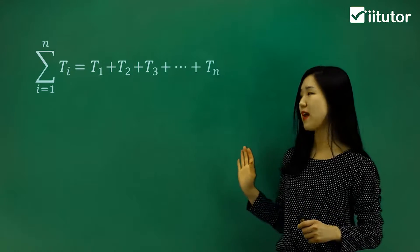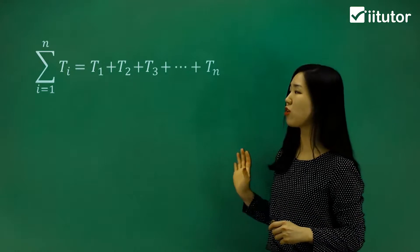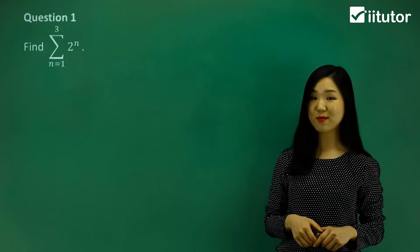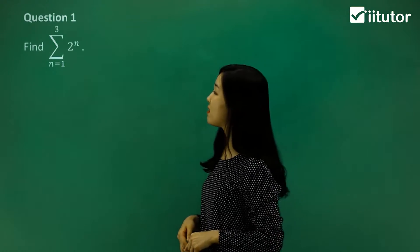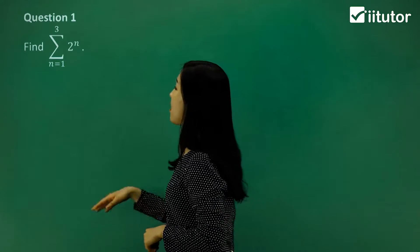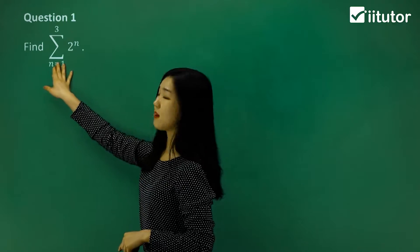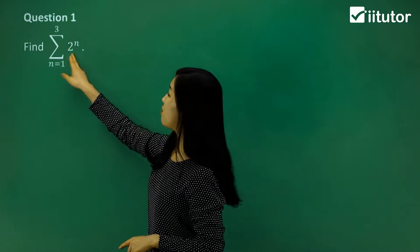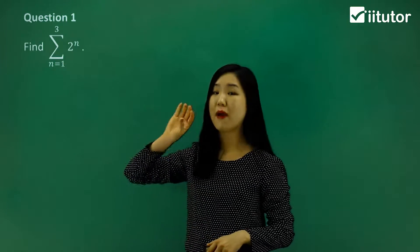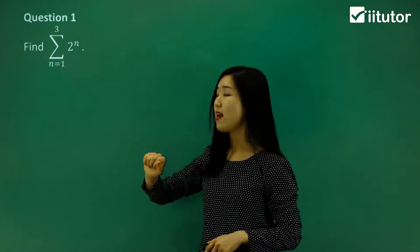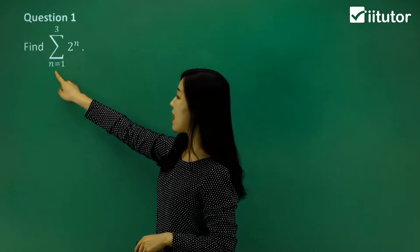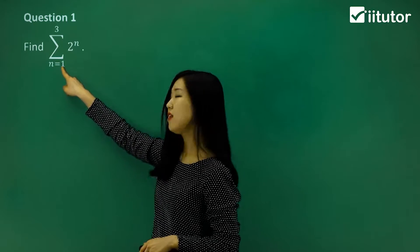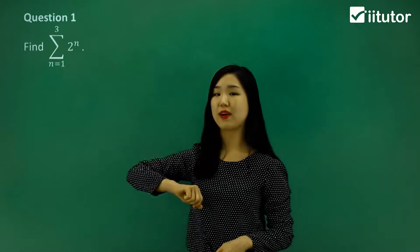Make sure you know what the sigma notation implies, and let's try some questions. Question 1 says find. It gives us the sigma notation, which implies sum again. The formula we're going to use is 2 to the power of n. They tell you n equals 1 at the bottom, so it starts with n equals 1 all the way to n equals 3.